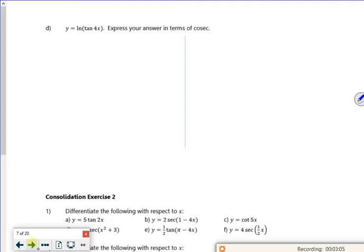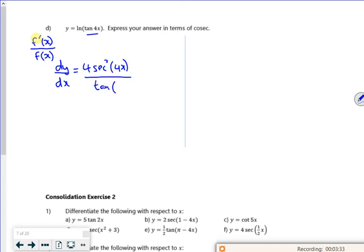So D, differentiating logs, if you remember, if you're differentiating a log, you differentiate inside the bracket over the original bracket. So that's inside the bracket. So my dy by dx. So to differentiate tan 4x, it's 4 from the chain rule, secant squared 4x over what it was before, which is tan 4x.